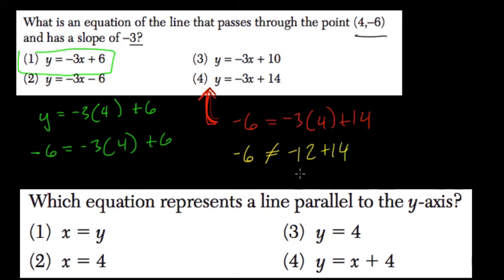-12 plus 14 is just 2, and 2 does not equal -6. So these two are not equal. It's not balanced. That's how you can tell if you found the wrong answer.